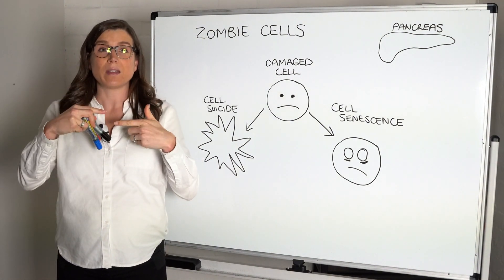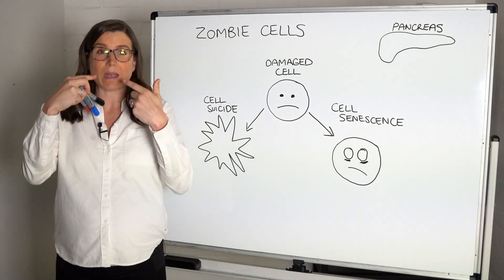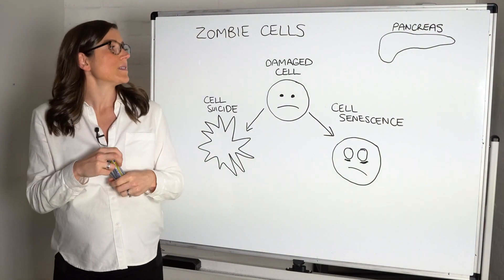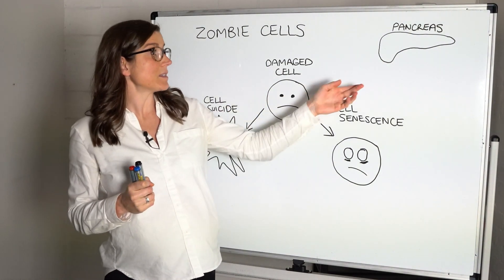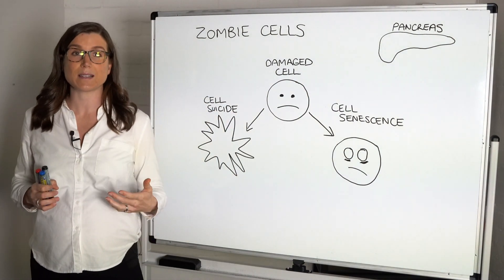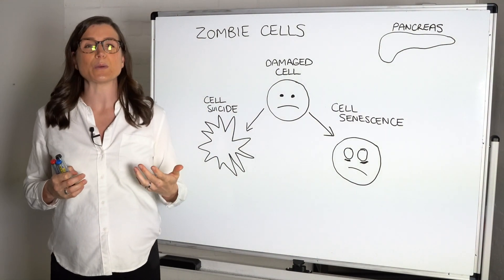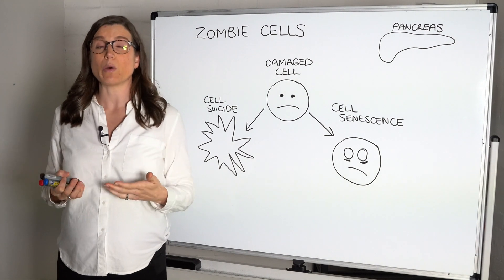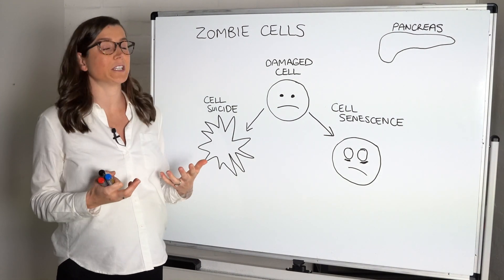Whereas in places like the pancreas, like the pancreatic beta cells, this happens at a much slower rate. Now why am I telling you this?